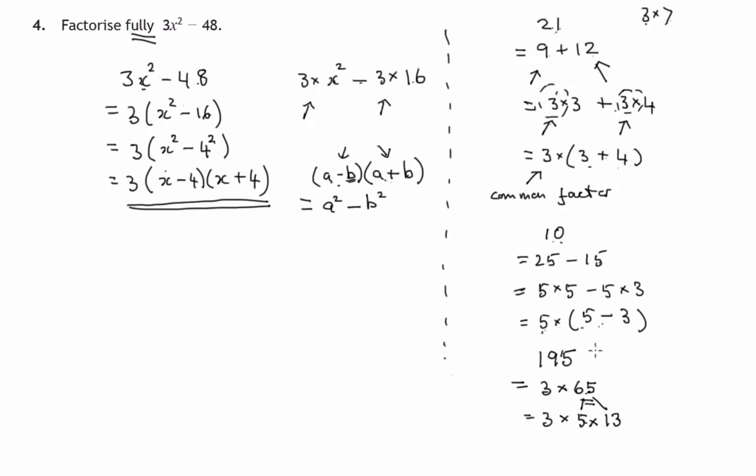So we've now got a fully factorized expression for 3x² minus 48. Now one last thing about this 195 – if we suggest that x equals 9 as an example, 9² is 81, 3 times 81 is 243, and if we take away 48 from that, we get 195.